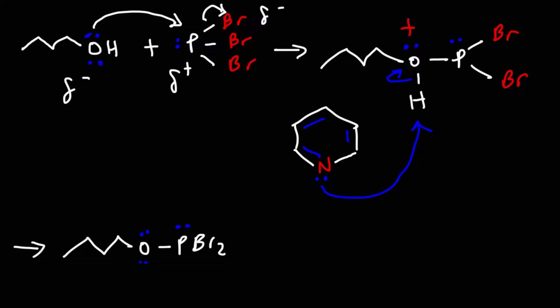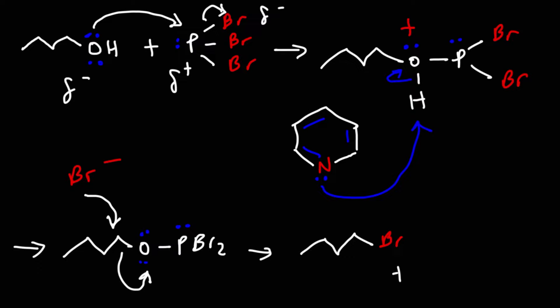In the final step, a bromide ion attacks the carbon and expels the phosphorus-containing group in an SN2 step, giving us 1-bromobutane as the product. That's the mechanism for the reaction of an alcohol with PBr₃ — this last step involves inversion at the carbon atom.